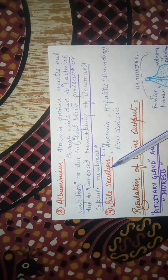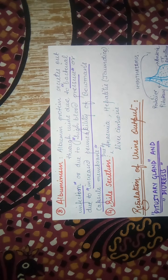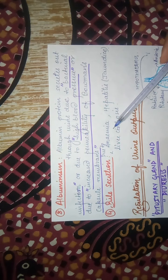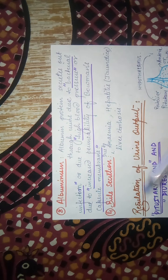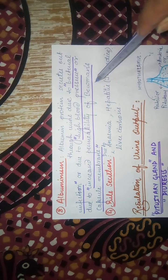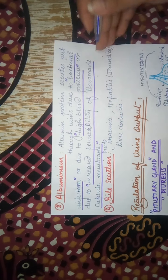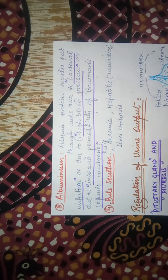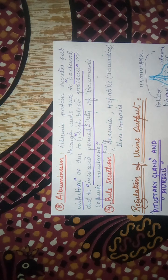The last condition is called bile secretion. If there is excess bile secretion, or if red blood cells are destroyed very quickly, then bilirubin and biliviridian components will increase. This condition occurs in cases of anemia, blood loss, hepatitis, jaundice, or liver cirrhosis. If bile is excessive, it will pass into the urine. So these were a few abnormalities related to the abnormal composition of certain components in urine.